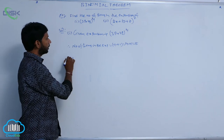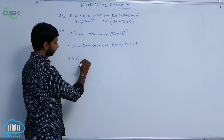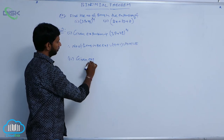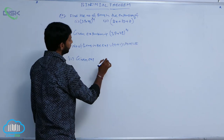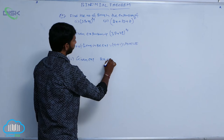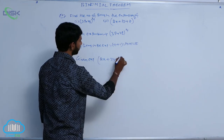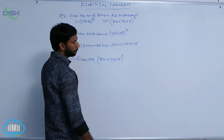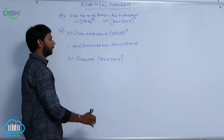Now the second one. The given expansion is (2x + 3y + z)^7.